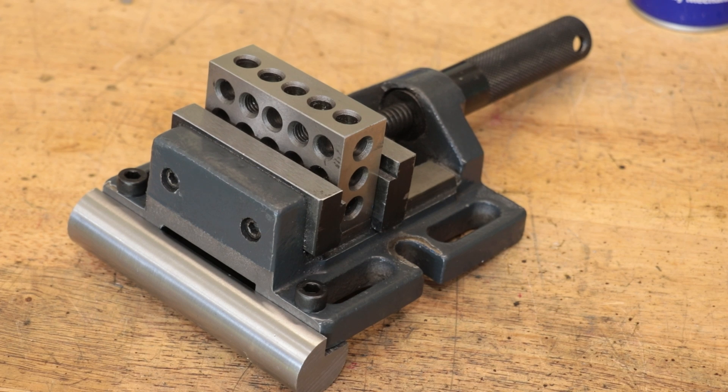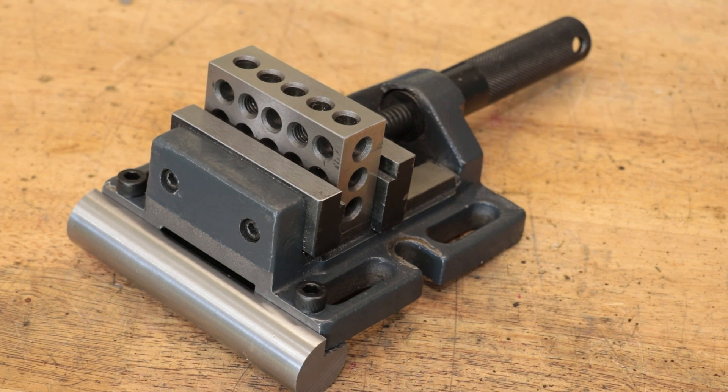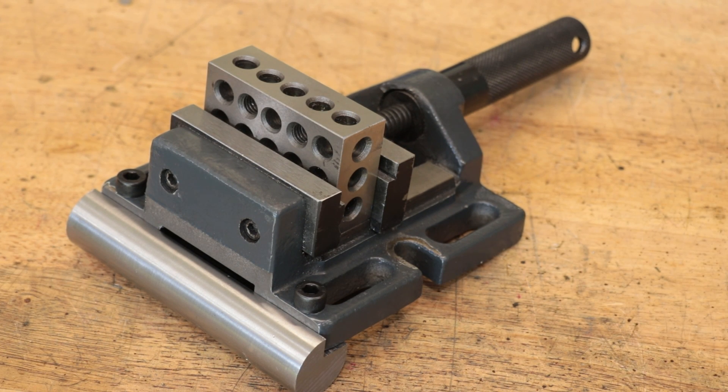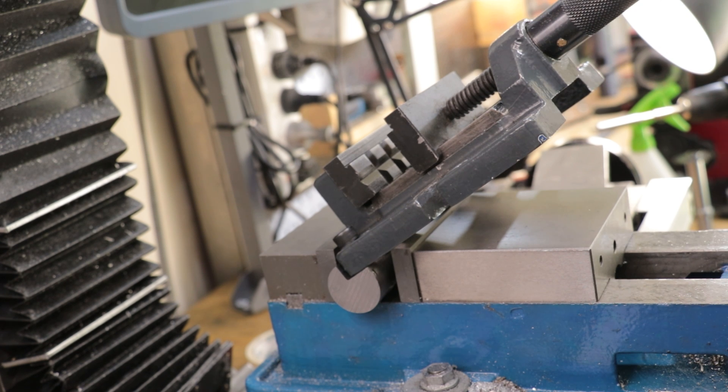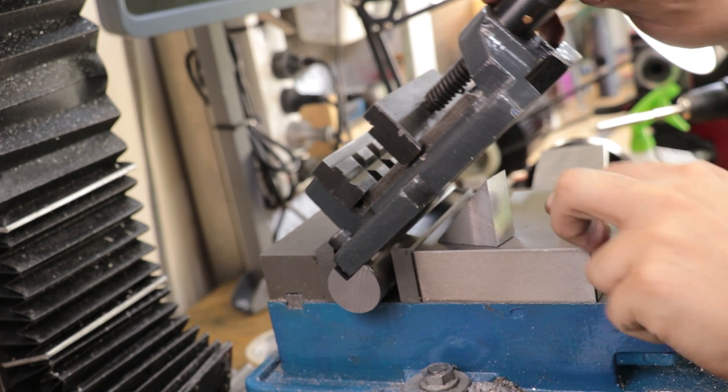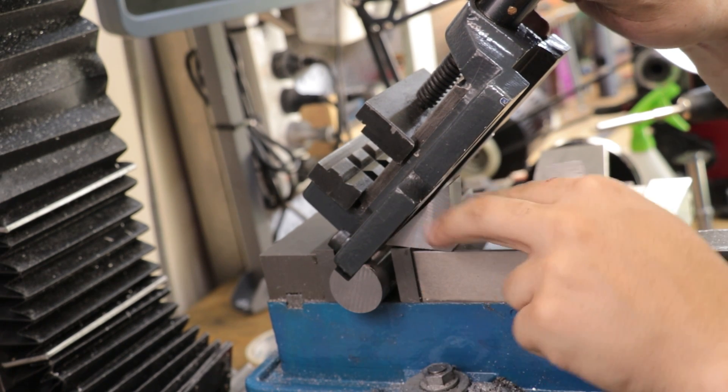You'll obviously need a bigger vise to clamp this in, but the overall setup is quite simple. Just tilt it to the angle that you need, and clamp the jaws shut. If you really think about it, this whole setup isn't too different from a sine or a tilt plate, except doing the fixturing is a lot easier.